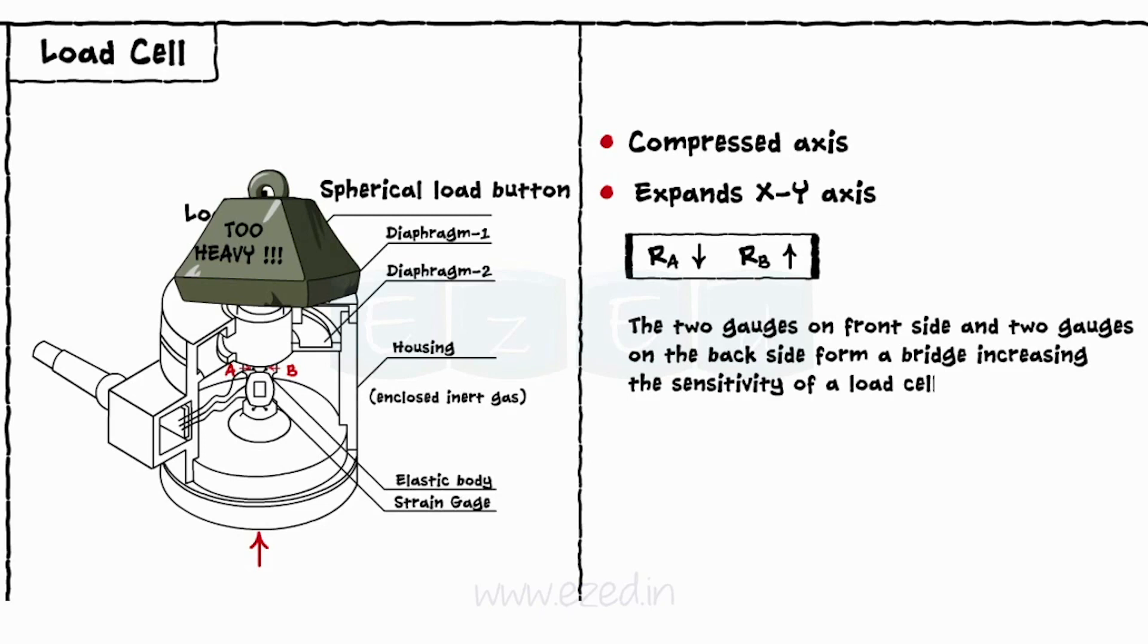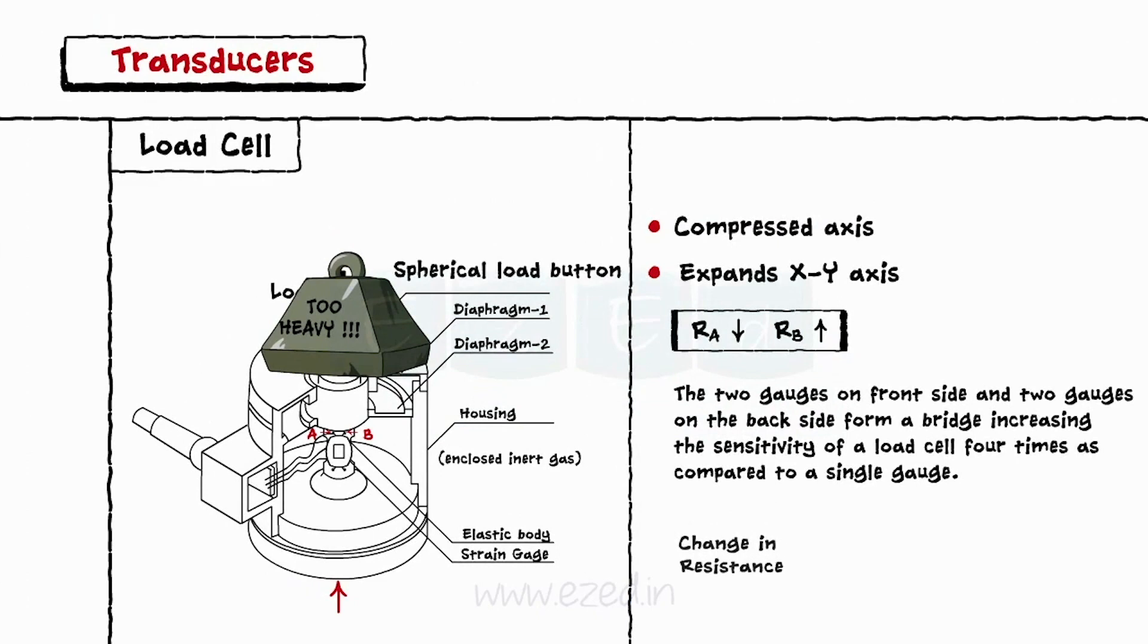The change in the resistance of the strain gauge produces the required output signal and correspondingly determines the weight of the load.